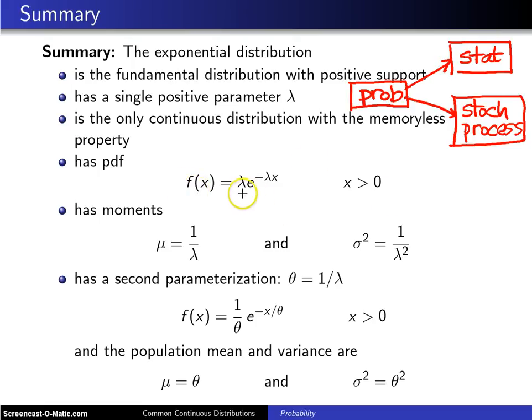It is not always parametrized with a rate. Sometimes it is parametrized with a parameter theta which is the reciprocal of lambda and it looks like 1 over theta e to the minus x over theta. In this particular case the population mean is theta and the population variance is theta squared.